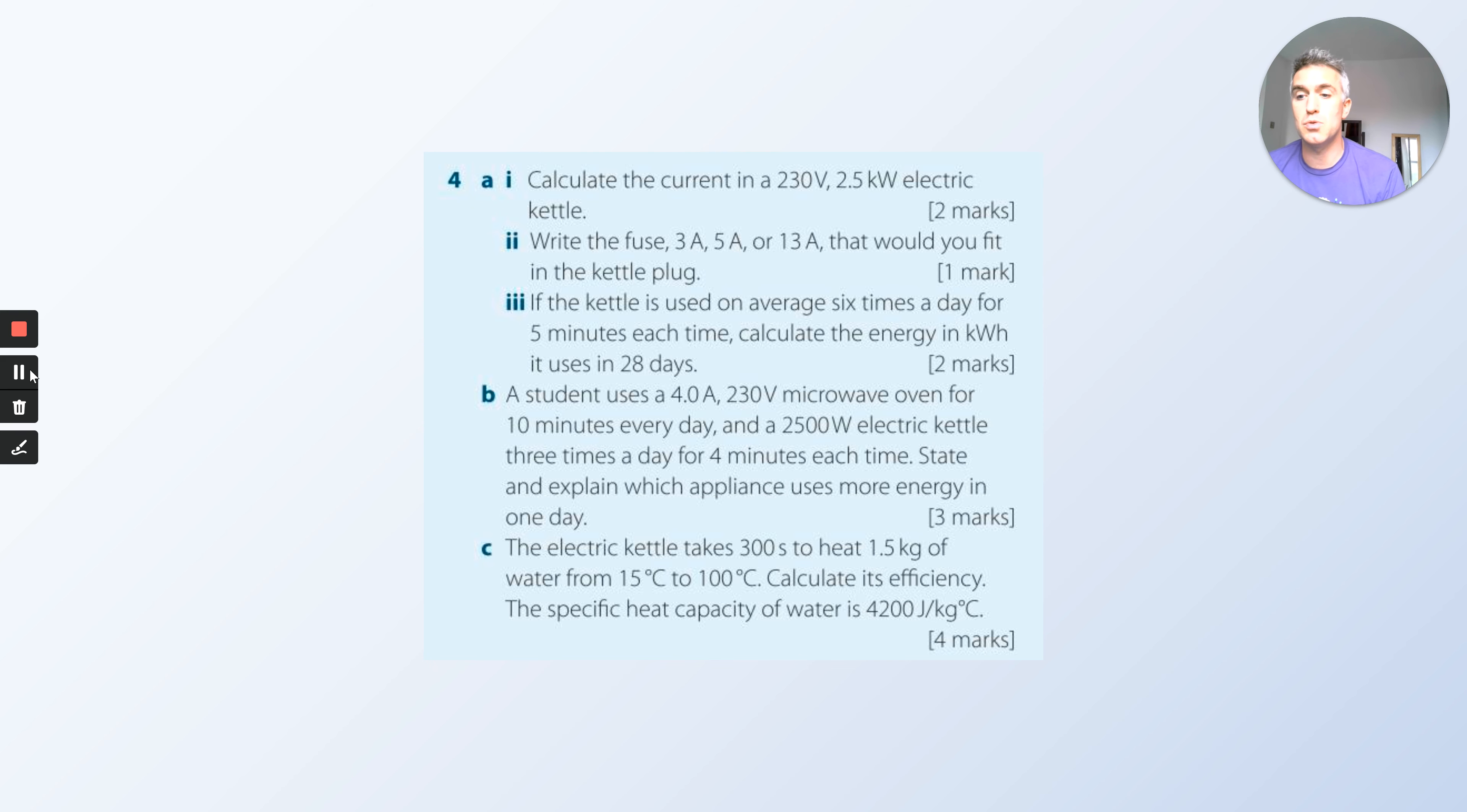If the kettle is used on average six times a day for five minutes, calculate the energy in kilowatt hours used in 28 days. So 2.5 kilowatts, watts is energy over time, so if you times the power by the time, that gives you the energy.